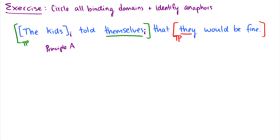What about 'they' in 'the kids told themselves that they would be fine'? 'They' can refer to either the kids or someone else, and either way it's okay — this is Principle B in effect. If 'they' refers to the kids, it's bound by 'the kids,' but it's bound outside of its binding domain. Therefore, it is free inside its binding domain, and it's okay. Because 'the kids' is in the upper TP, and the binding domain of 'they' only extends to the smaller TP. If 'they' refers to someone else, it's not bound at all, so it's also okay.